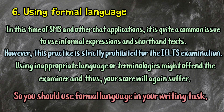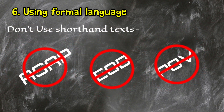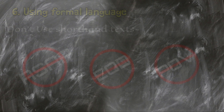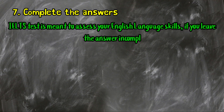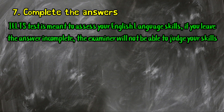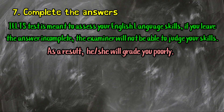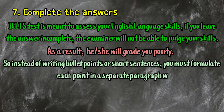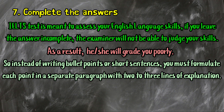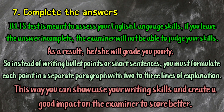So you should use formal language in your writing task. Number 7: Complete your answer. The IELTS test is meant to assess your English language skills — if you leave the answer incomplete, the examiner will not be able to judge your skills and will grade you poorly. So instead of writing bullet points or short sentences, you must formulate each point in a separate paragraph with 2-3 lines of explanation. This way you can showcase your writing skills and create a good impact on the examiner to score better.